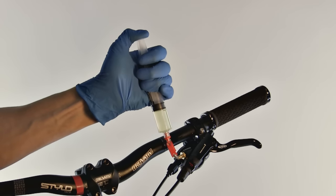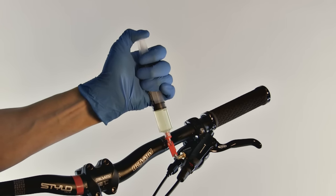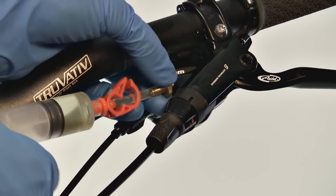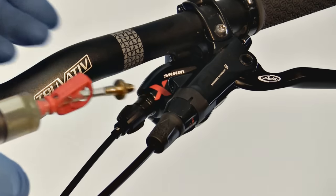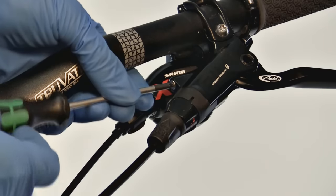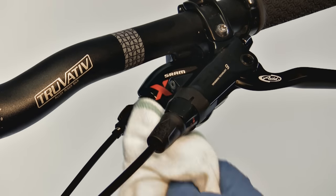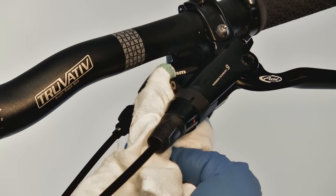Once the large bubbles at the lever have stopped, push then release the plunger one last time. Remove the syringe and reinstall the bleed port screw. Use a lint free rag to immediately wipe off any excess fluid.